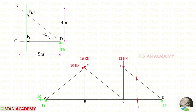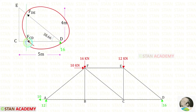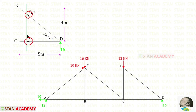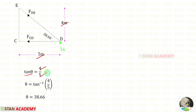We know that the section should not cut more than three members. Right now it is cutting only two members, DE and DC. We can take either the left side or the right side; I have taken the right side because it is easier. Wherever the members are cut, we have to give arrows and initially assume them to be tensile. We can extend the members up to the ends by dotted lines. We need to find this angle: tan theta equals opposite side by adjacent side, so tan theta is 4 upon 5, giving theta as 38.66 degrees.